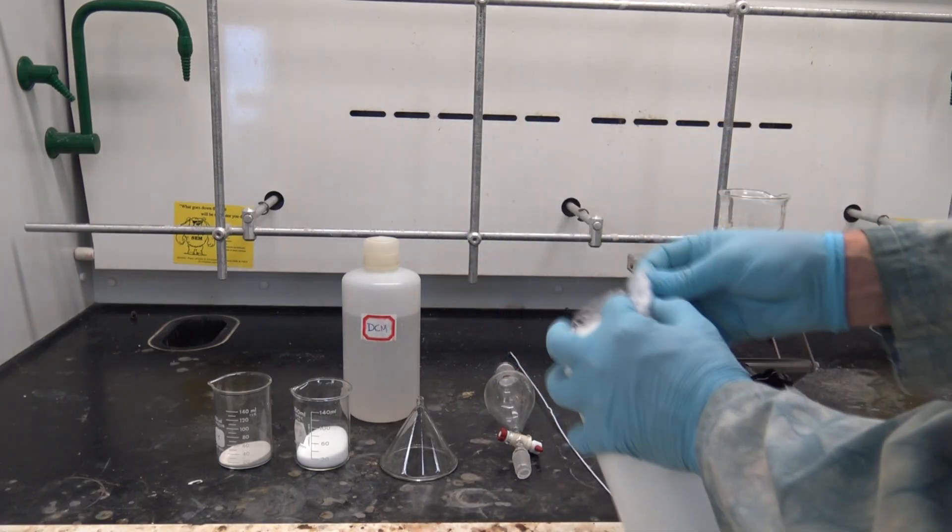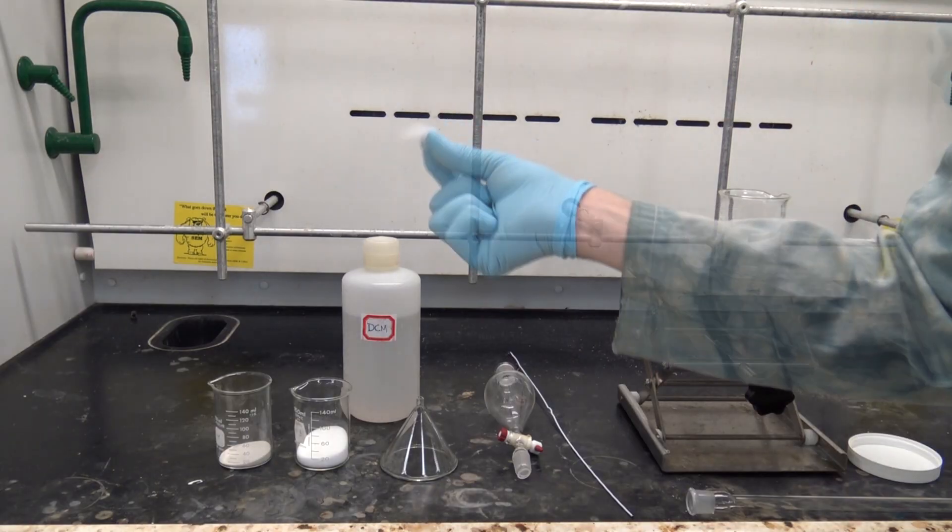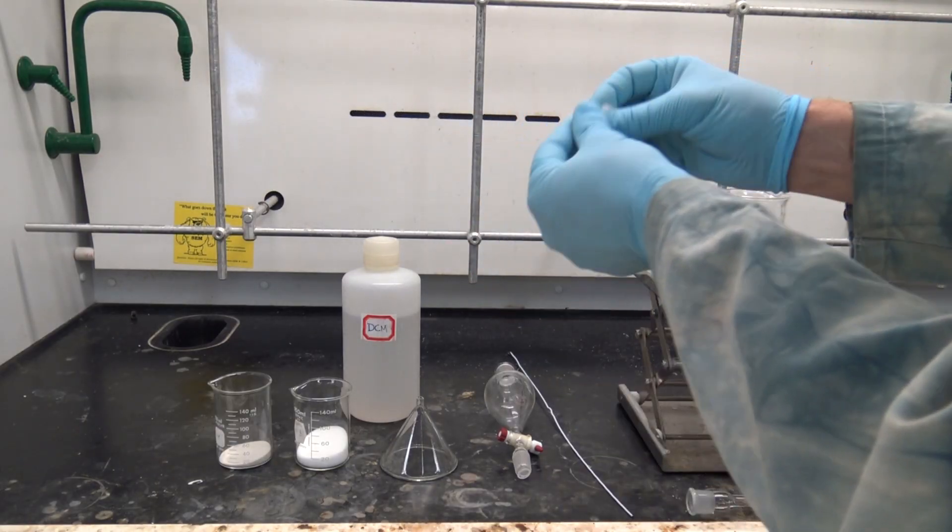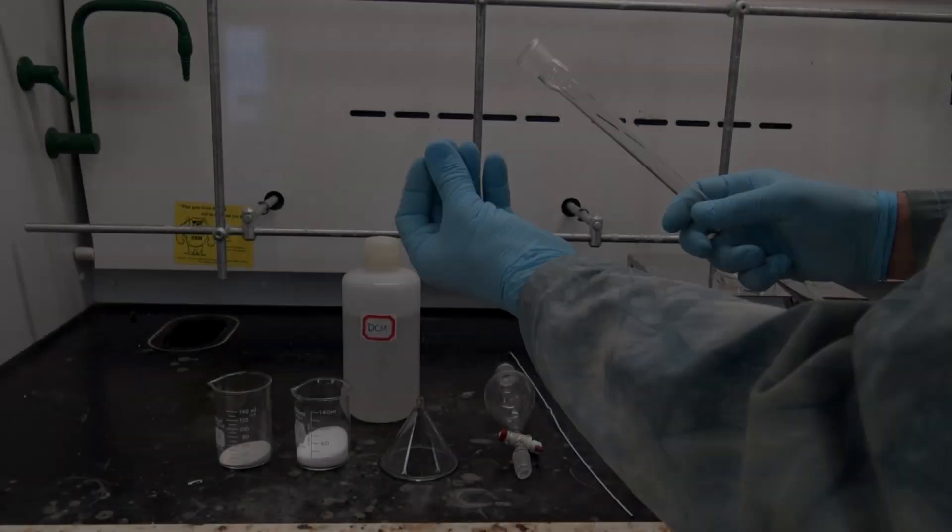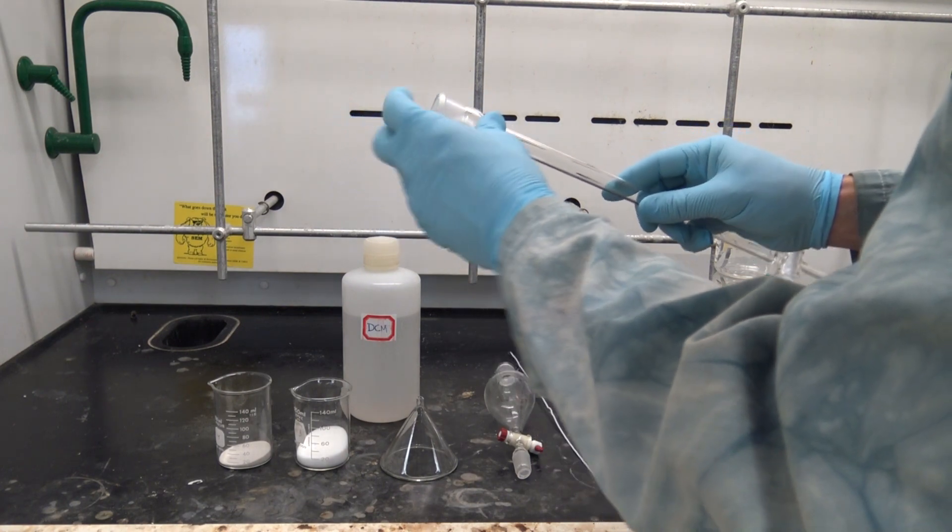The first order of business is to be sure that solids don't flow through our column like the liquids will, so we're going to use a small tuft of glass wool. Not much at all, just enough to block the entrance to the stopcock. I'm going to ball that glass wool up and push it into the column from the top.